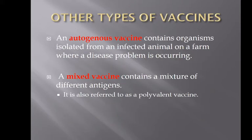Other vaccine types. An autogenous vaccine contains organisms isolated from an infected animal on a farm where a disease problem is occurring — similar to how early vaccines were developed, like taking material from smallpox victims to inoculate others. A mixed vaccine, also referred to as a polyvalent vaccine, contains a mixture of different antigens. Examples include canine distemper with distemper, lepto, parvo, and parainfluenza, or a five-way equine vaccine with rhino, tetanus, and others.